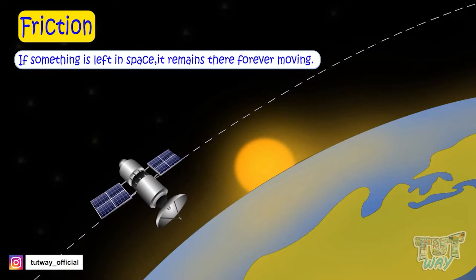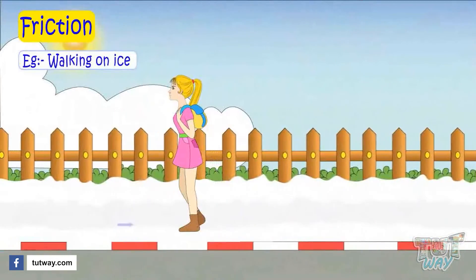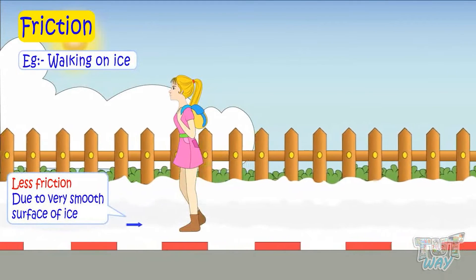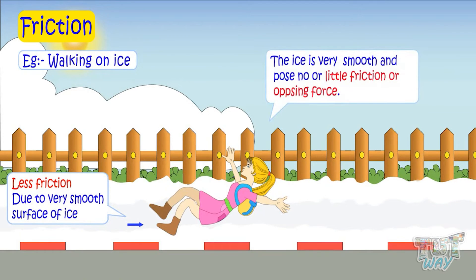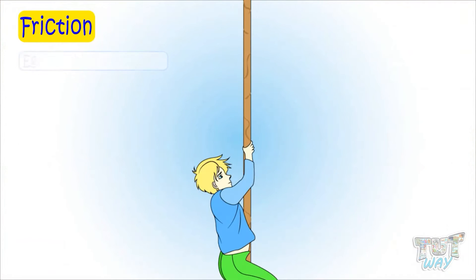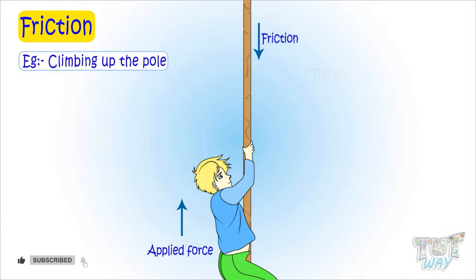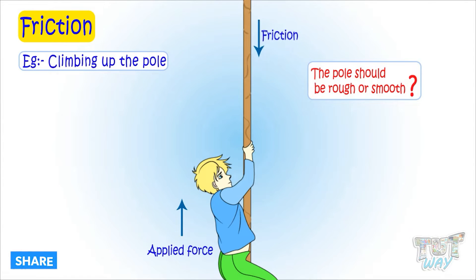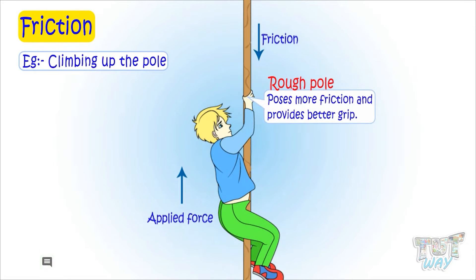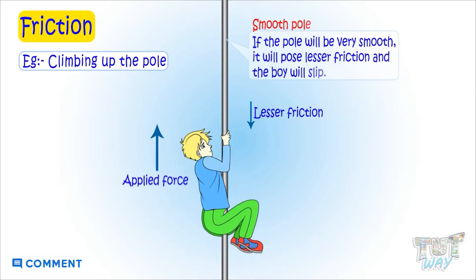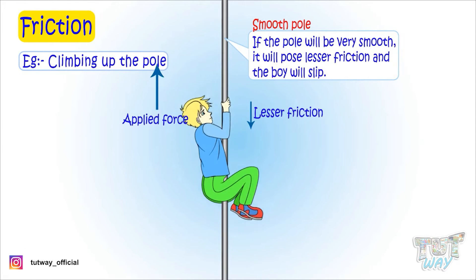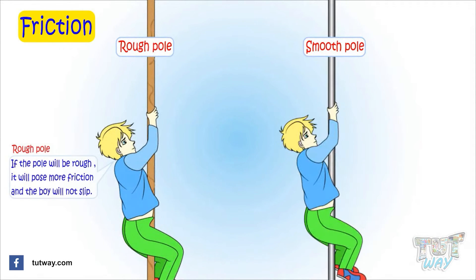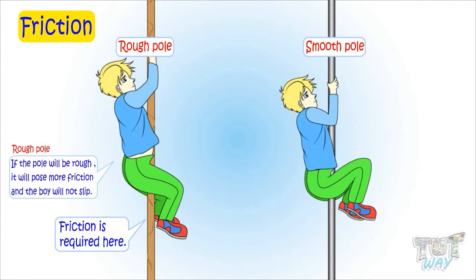Now let's see some examples where we need friction. Here, a girl is trying to walk on a road covered with ice, and it's very difficult because the road is very slippery. It is because ice is very smooth and poses no friction, which makes the surface slippery. Here, a boy wants to climb a pole. Should the pole be very smooth or rough? The smoother the surface, the lesser the friction — if the pole is very smooth, it will pose no friction and the boy will slip. But if the pole is rough, it will pose friction and the boy will not slip. So the pole should be rough so that the boy is able to climb it easily. Friction is required here.